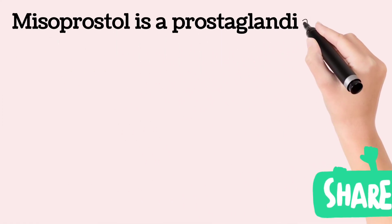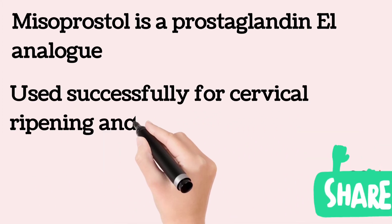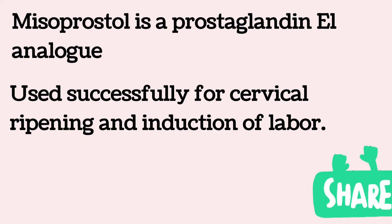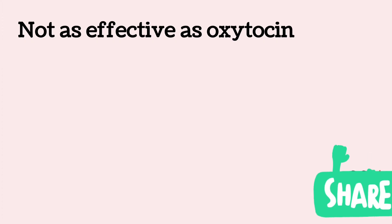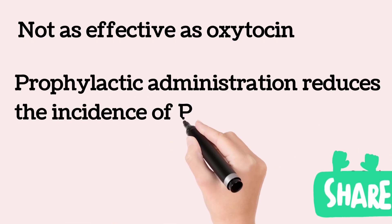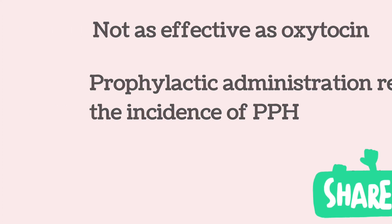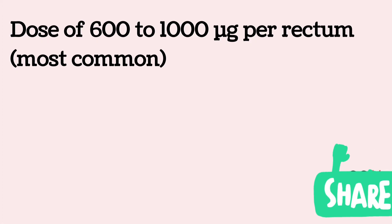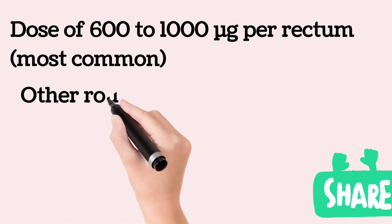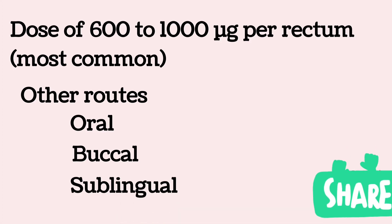Misoprostol is a prostaglandin E1 analog that has been successfully used for cervical ripening and induction of labour. Although it is not as effective as oxytocin, prophylactic misoprostol administration reduces the incidence of postpartum hemorrhage compared with placebo. A dose of 600 to 1000 micrograms per rectum is commonly administered, and administration via oral, buccal, and sublingual routes has also been described.